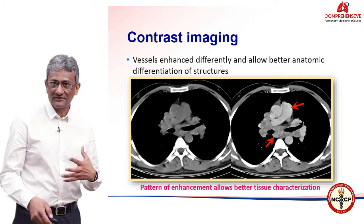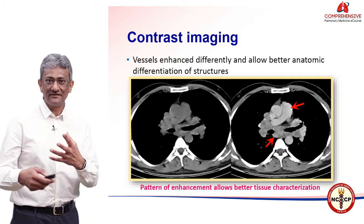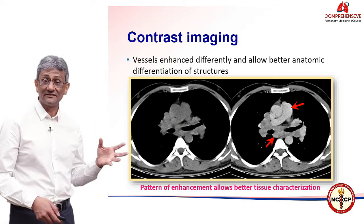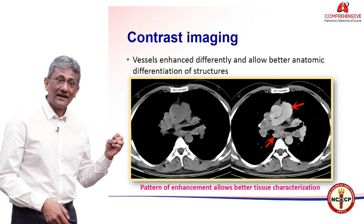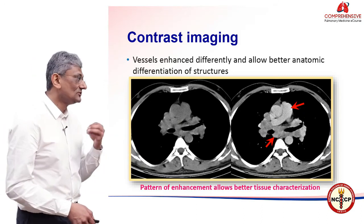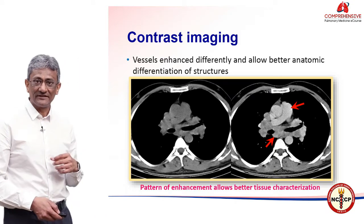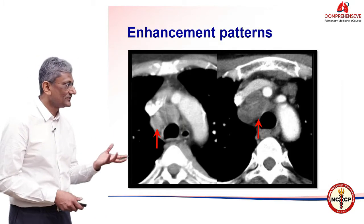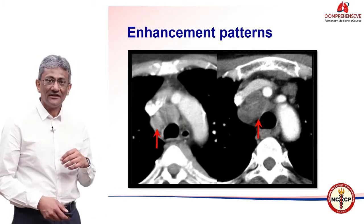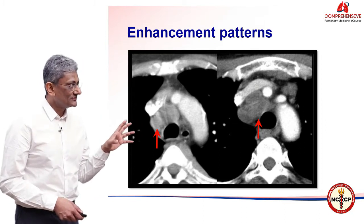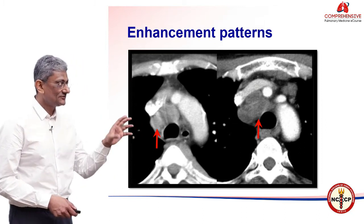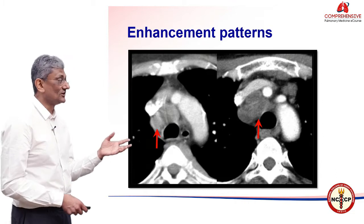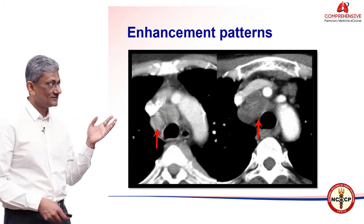The pattern of enhancement — whether these are nodules in the lungs or lymph nodes — the patterns are different, and that also allows us some form of better tissue characterization. For example, the lymph node in the paratracheal region on the left shows homogeneous enhancement, which means it is non-necrotic.